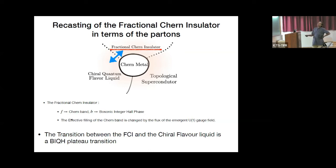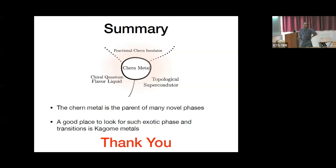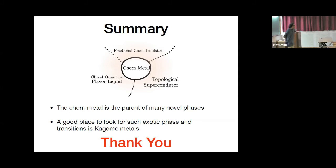This parton framework helps us understand the transition between the fractional Chern insulator and the chiral quantum flavor liquid, which is nothing but a plateau transition for the bosonic Hall effect — a new class of transition that naturally describes a direct transition between these two very different phases of matter. In summary, the Chern metal is a parent to many novel phases; its instabilities are quite different from those of a trivial band, and kagome metals are a promising place to look for these exotic phases.